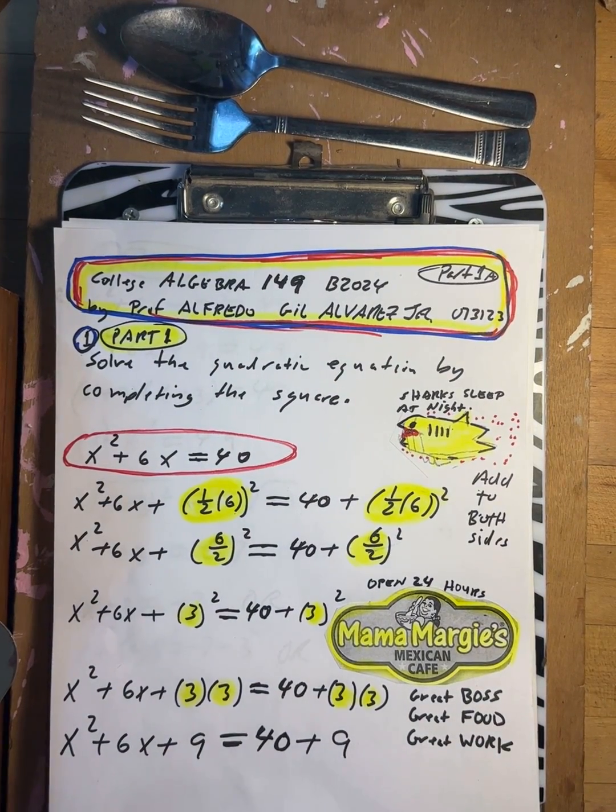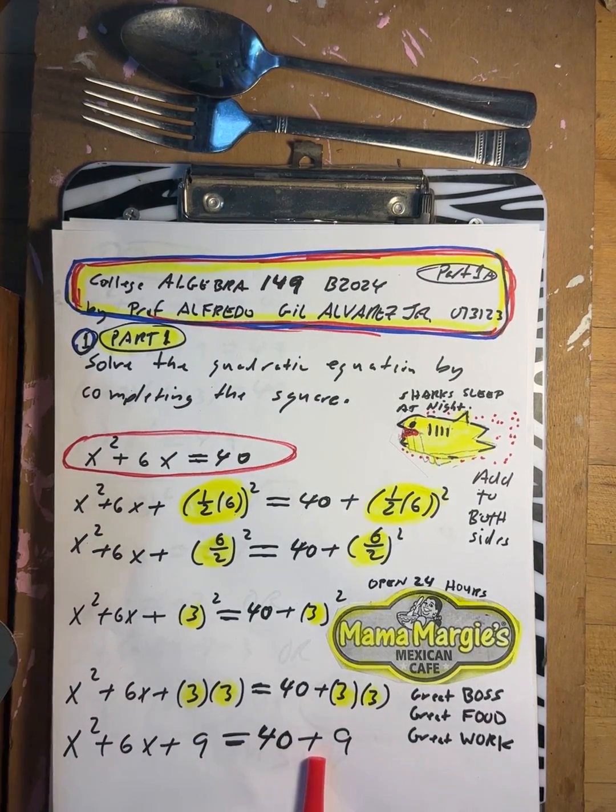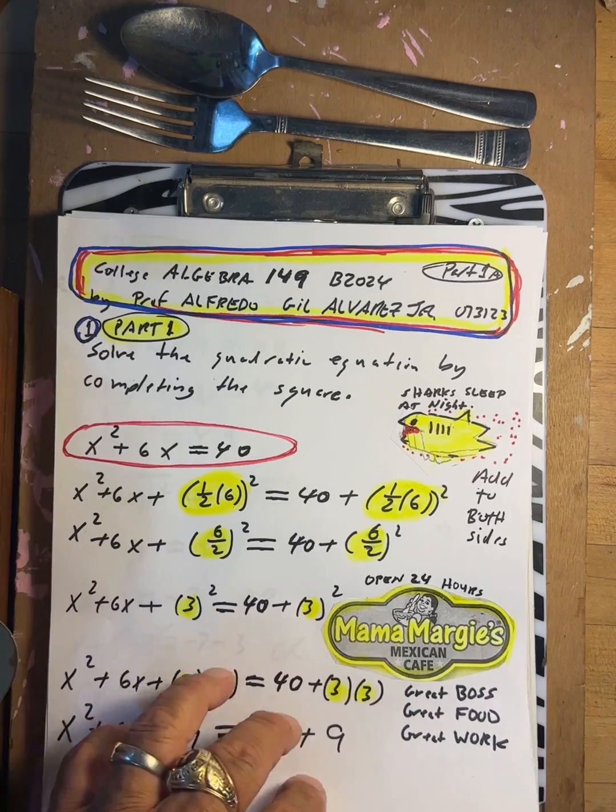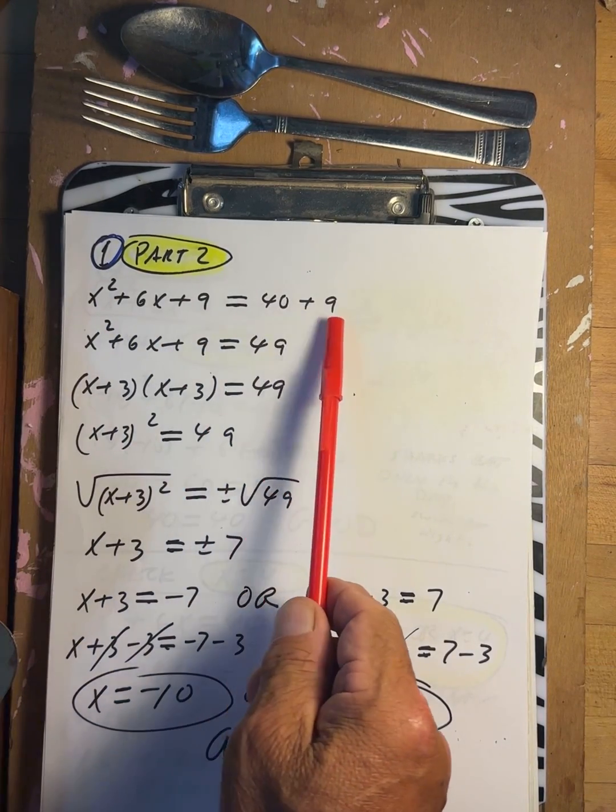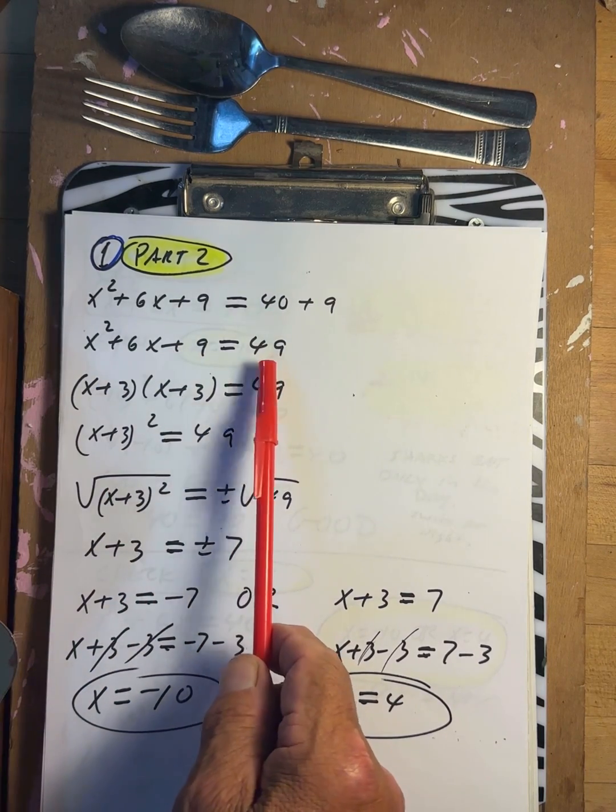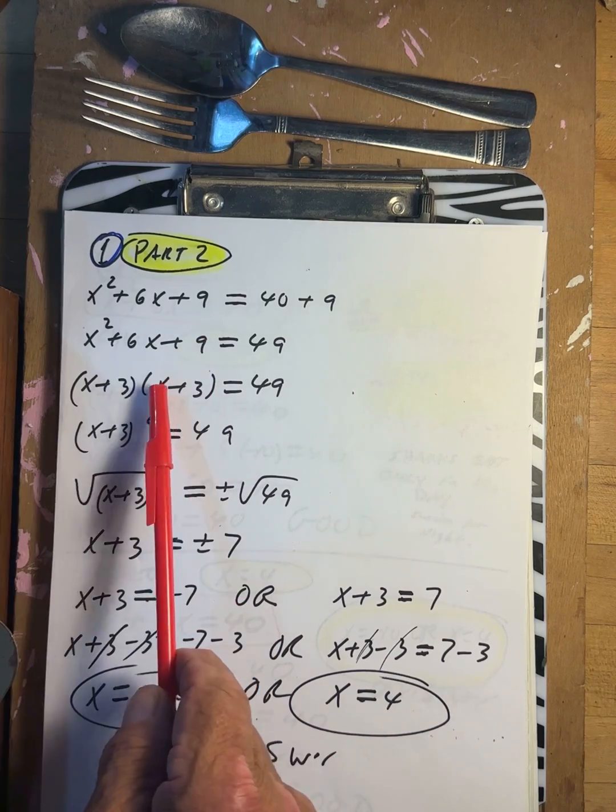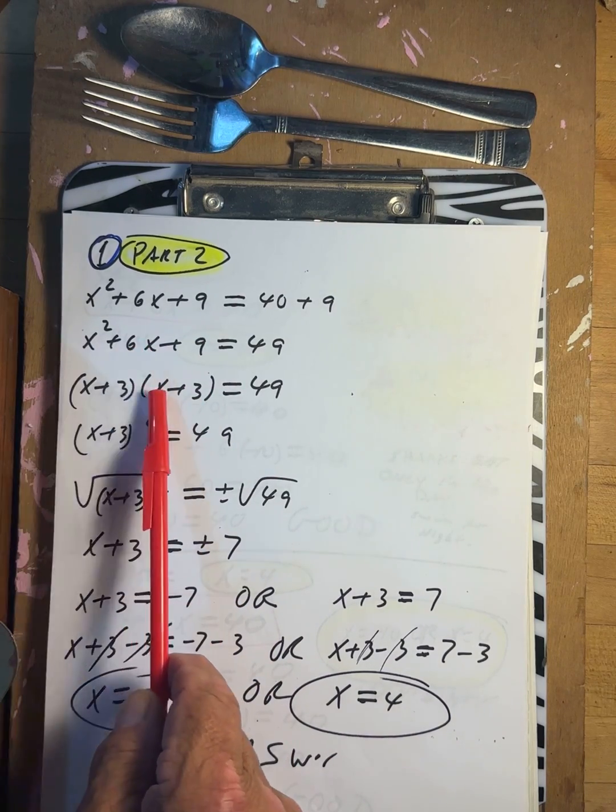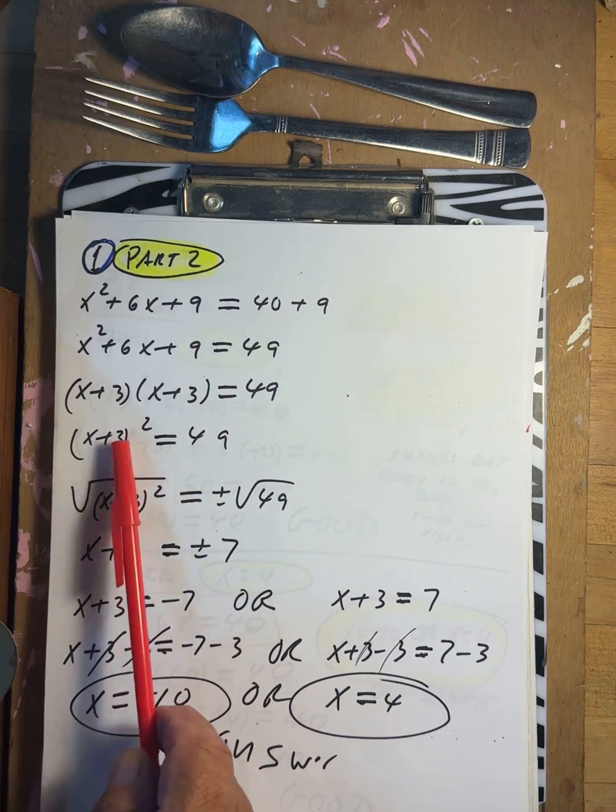So now we have x squared plus 6x plus 9 equals 40 plus 9. x squared plus 6x plus 9 equals 49. So this factors into x plus 3, x plus 3. 3 times 3 is 9, 3x and 3x is 6x, x times x is x squared. So this is x plus 3 squared equals 49.